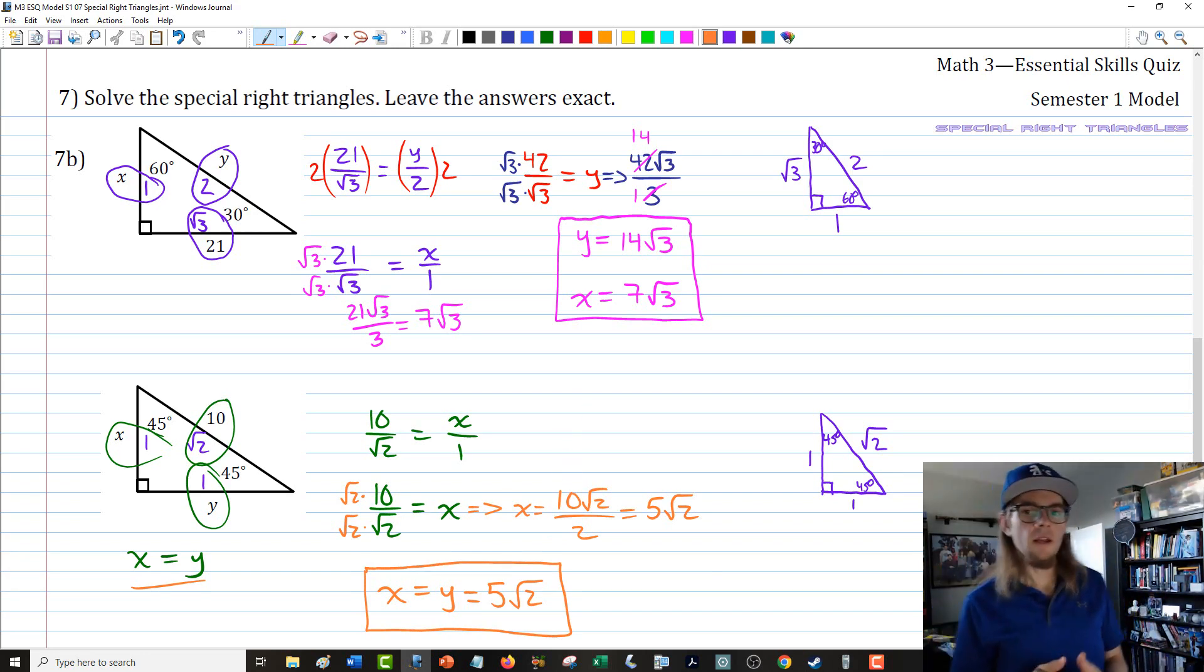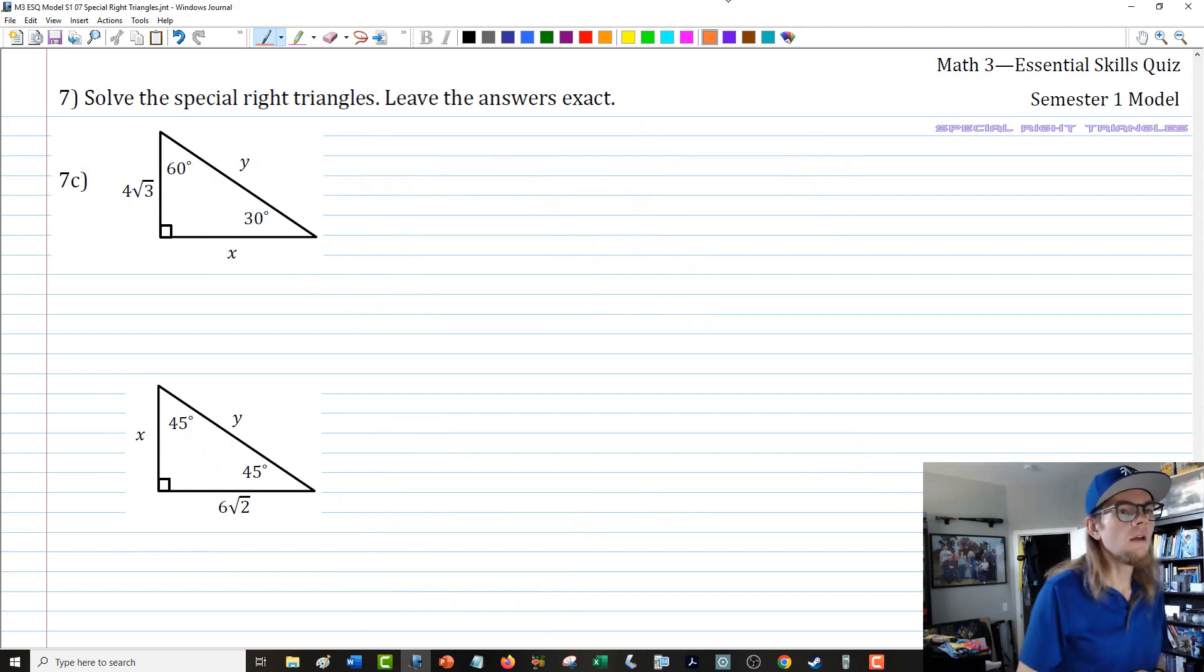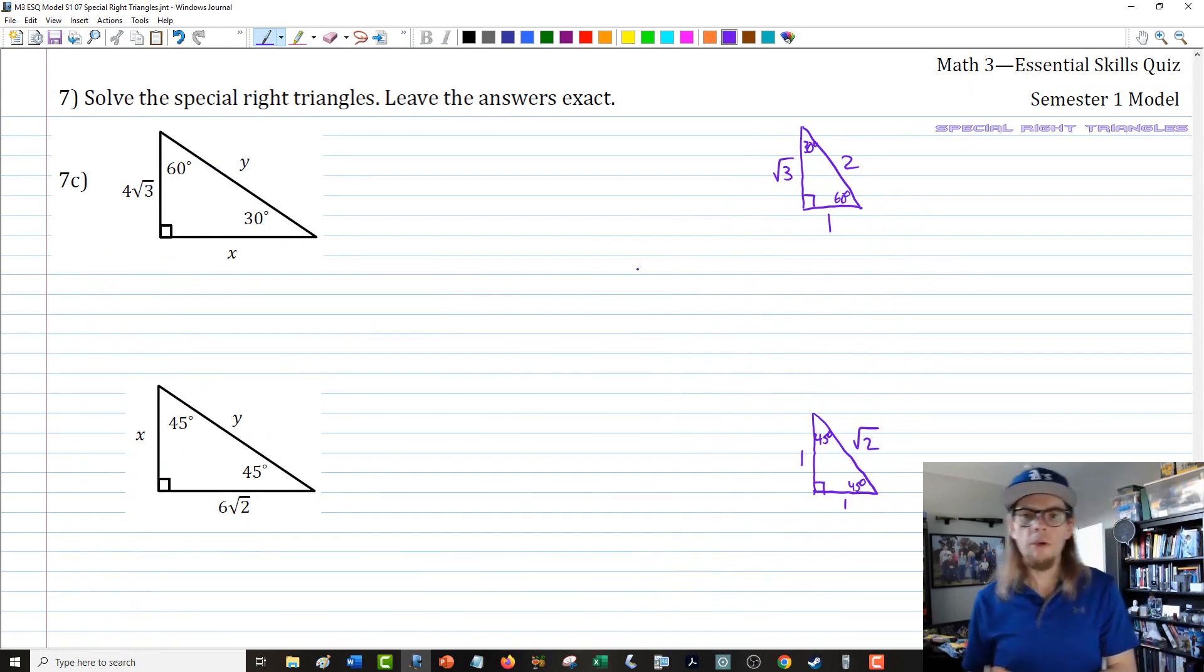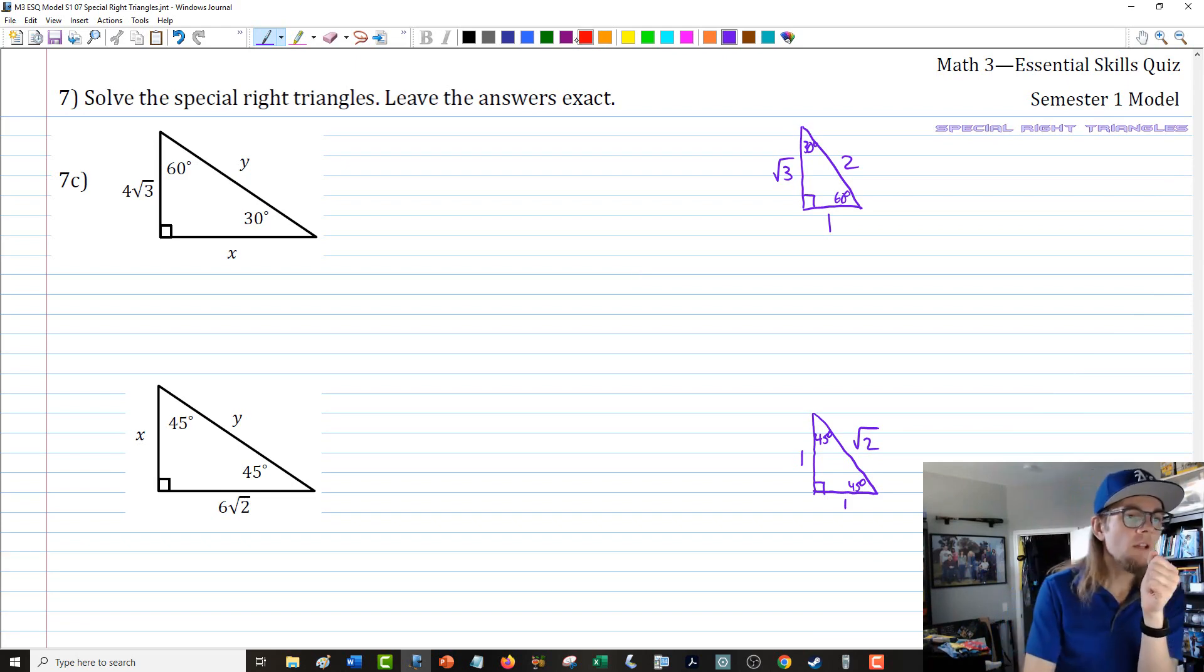That brings us finally to our last problem here, question 7c. We've got two more special right triangles. In this case, we've thrown some weird stuff at you. We've got some square roots in there, but maybe not in the place you were looking for. Let's begin like we have every single time by labeling the appropriate sides. We'll have root 3 opposite the 60, 1 opposite the 30, and 2 on the hypotenuse. For the isosceles right triangle, we'll have 1 and 1 for the legs and root 2 for the hypotenuse.